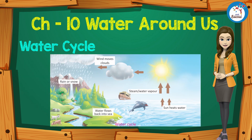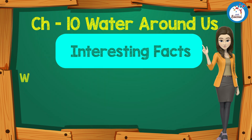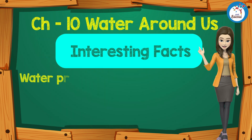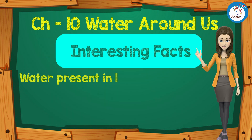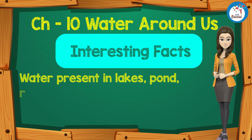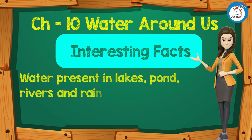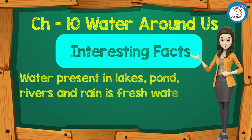Wind moves clouds; rain or snow falls; water flows back into the sea as steam or water vapor; the sun heats water. Interesting facts: Water present in lakes, ponds, rivers, and rain is fresh water.